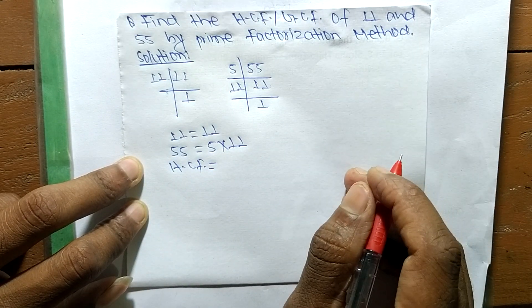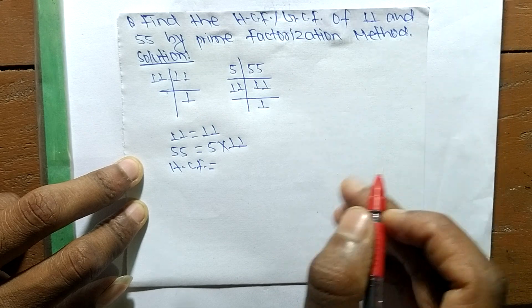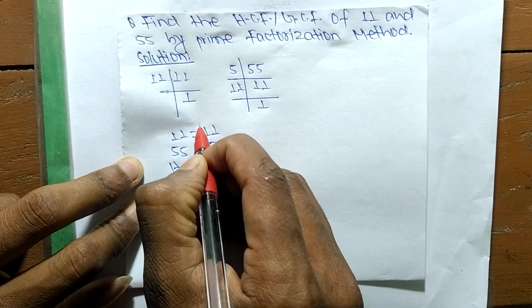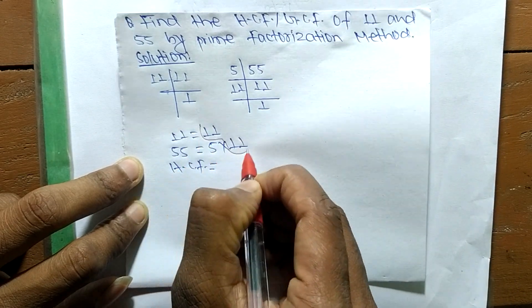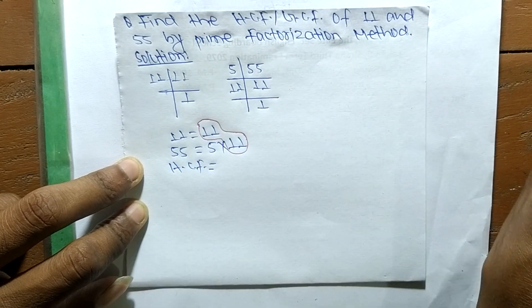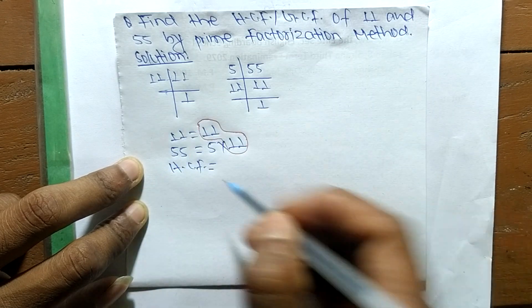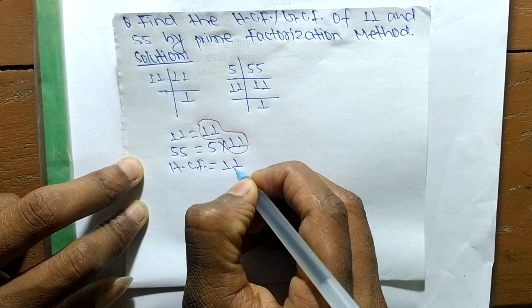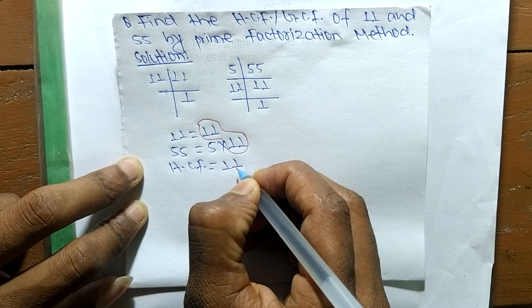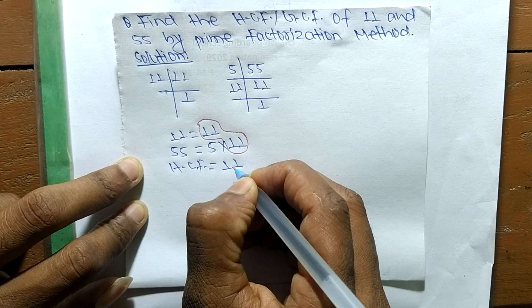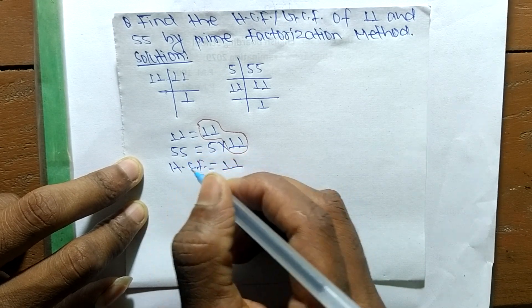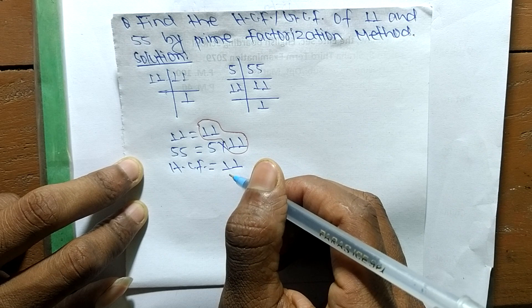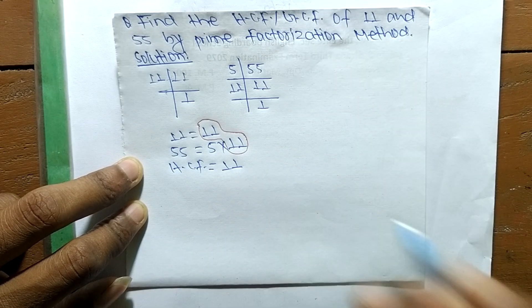We find the common factors in the prime factors of 11 and 55. The common factor here is 11, so the HCF is equal to 11. That means 11 is the HCF of 11 and 55. That's all for today — thanks for watching.